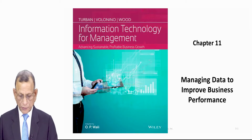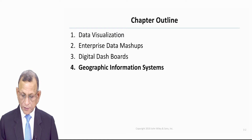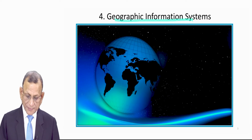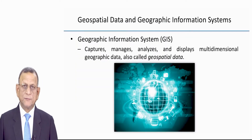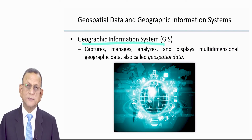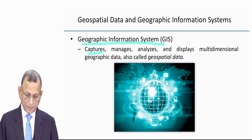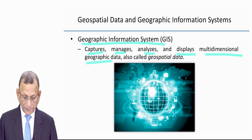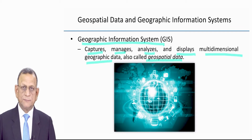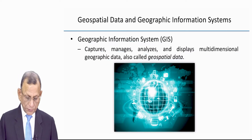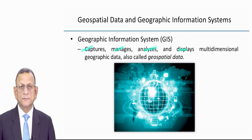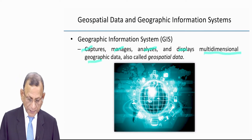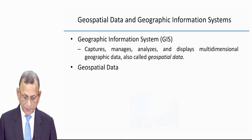The last section of chapter 11 is about Geographic Information Systems, GIS. Geographic Information Systems captures, manages, analyzes, and displays multidimensional geographic data, also called geospatial data. This data is multidimensional data related to specific geography, which is why it is also called geospatial data.